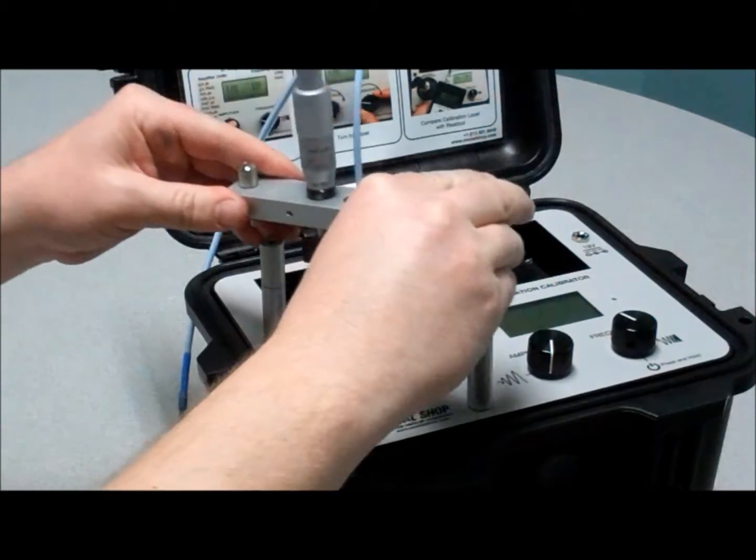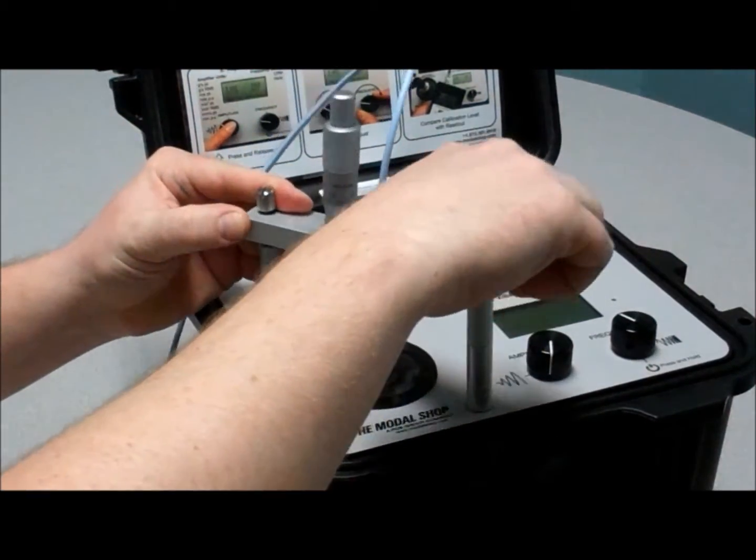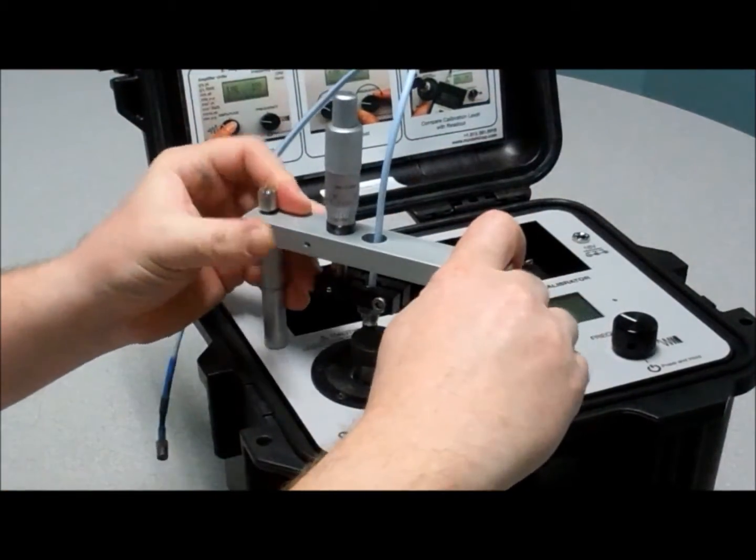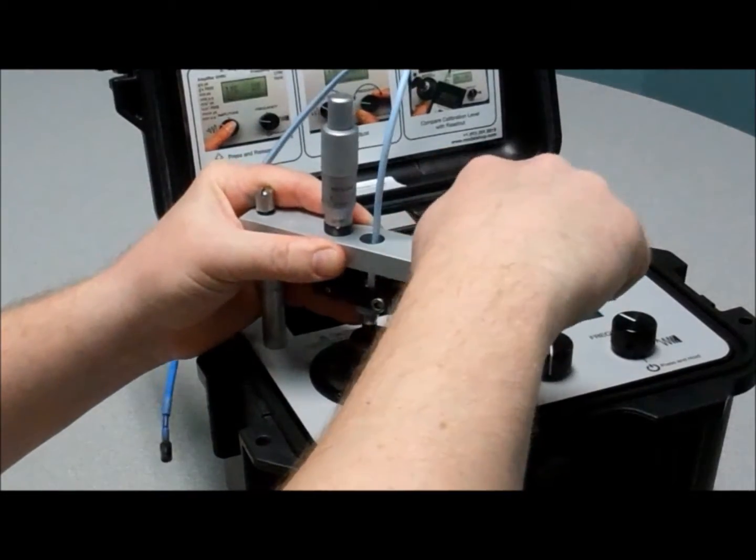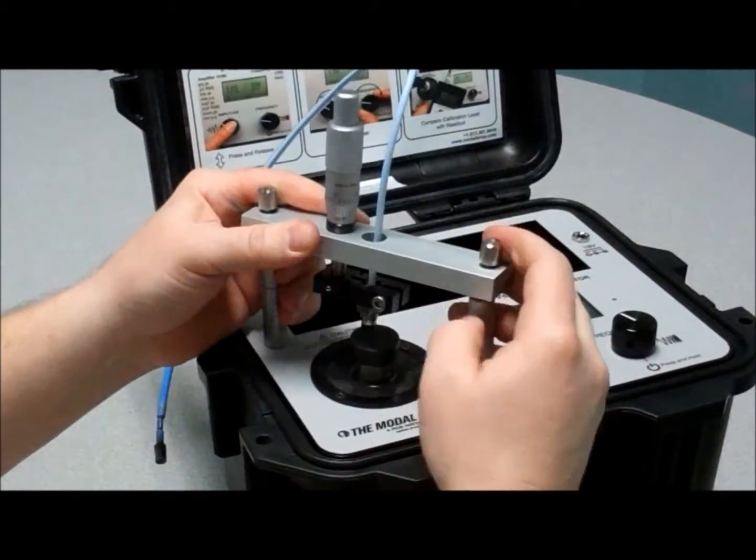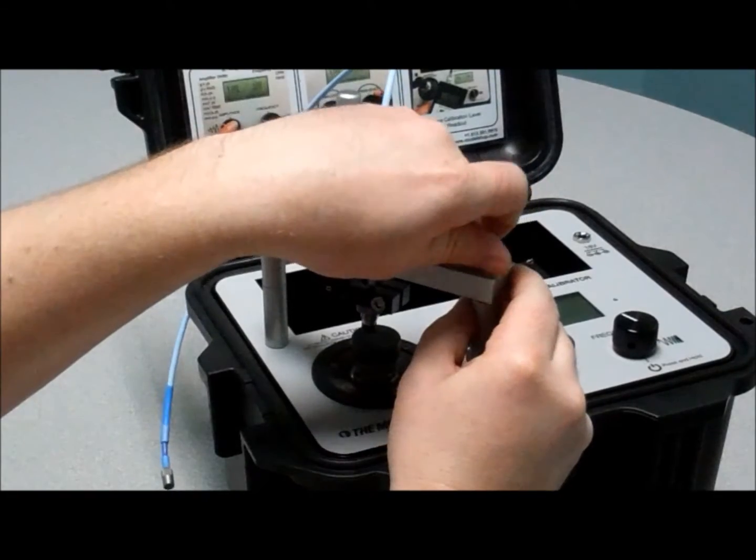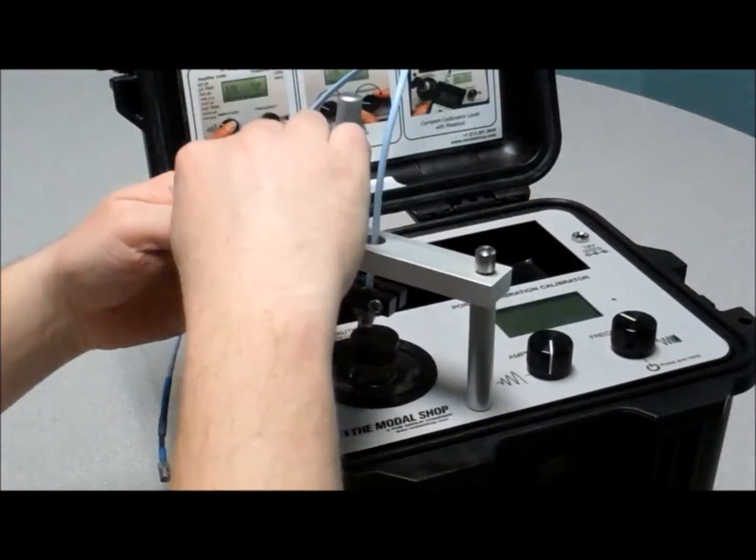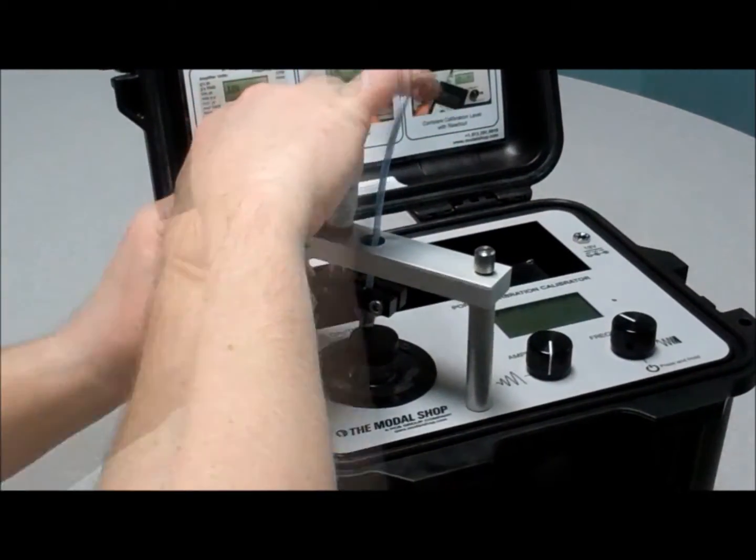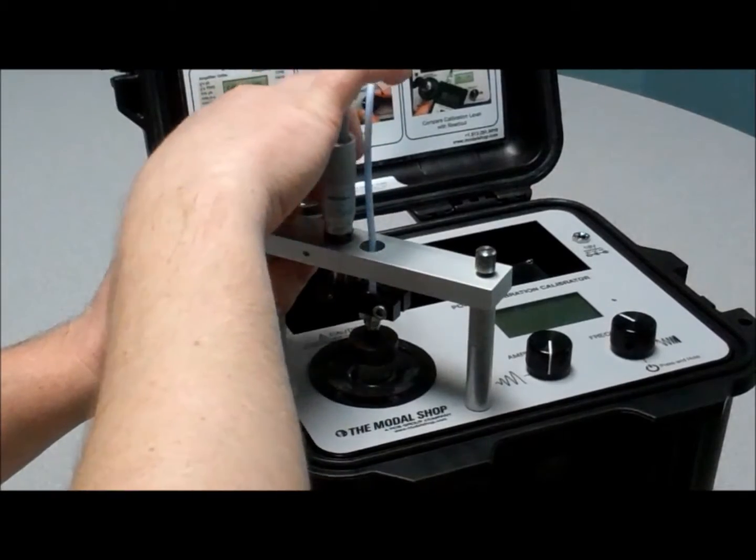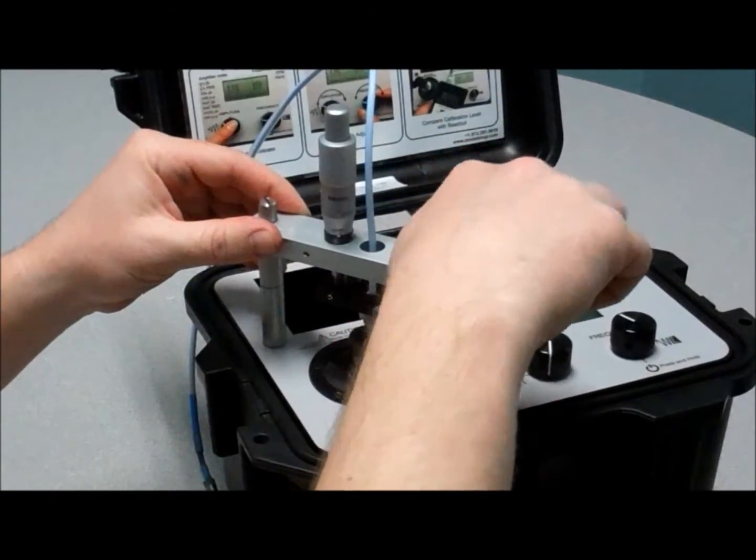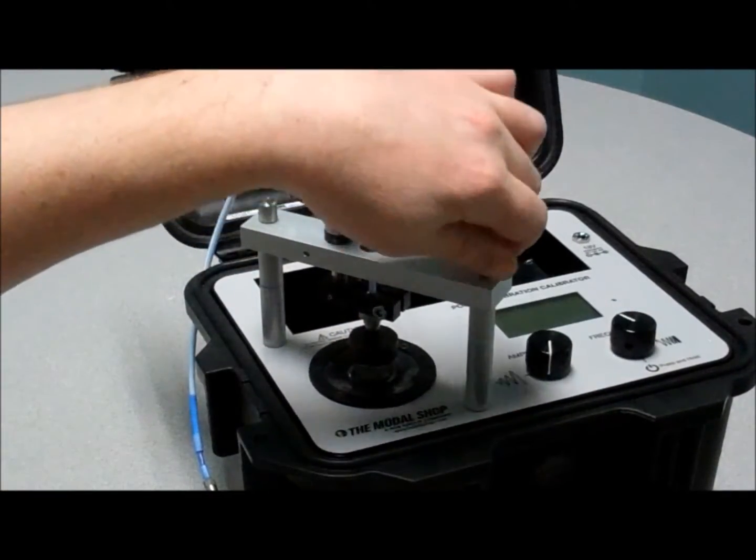Attach the probe bar fixture to the calibrator using the two panel screws. To ensure correct alignment and attachment, tighten the panel screws gradually switching from one side to the other.